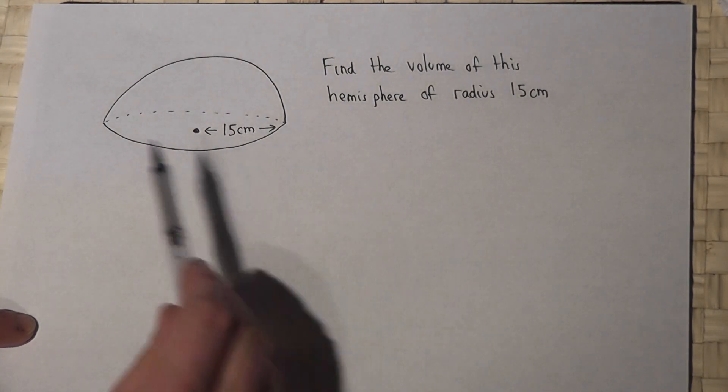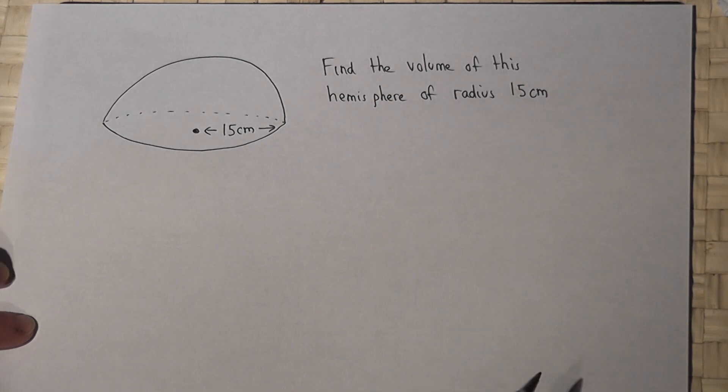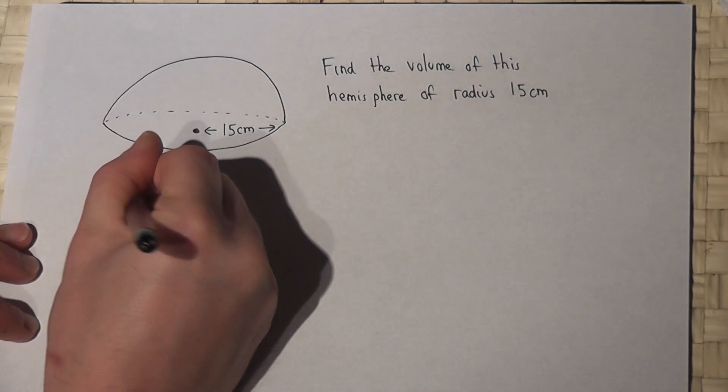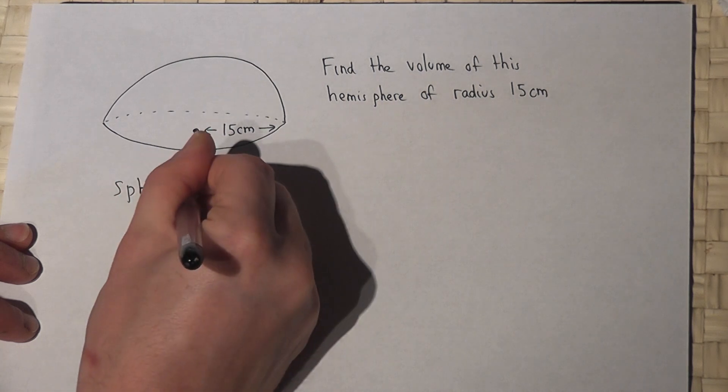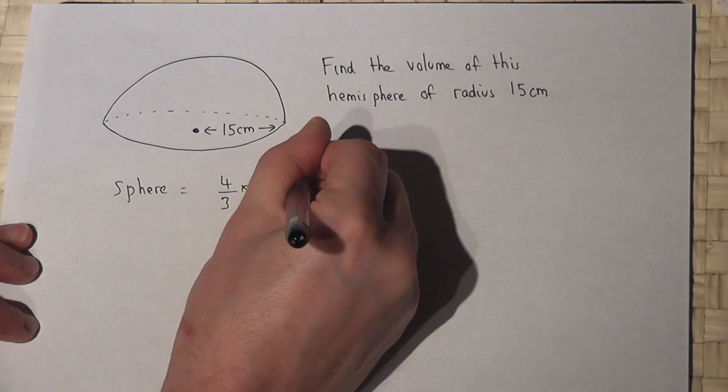In this problem we're asked to find the volume of a hemisphere which has a radius of 15 centimeters. Now if we've got a sphere, then the volume is four thirds times pi times r cubed.